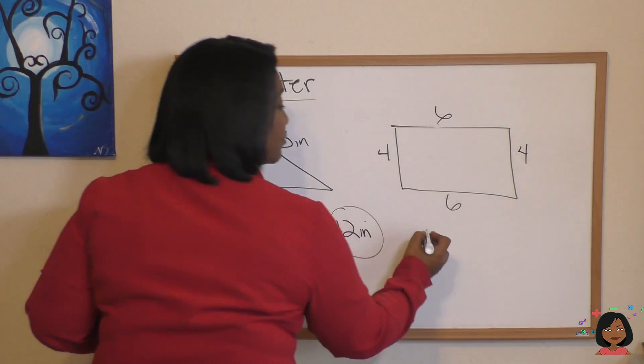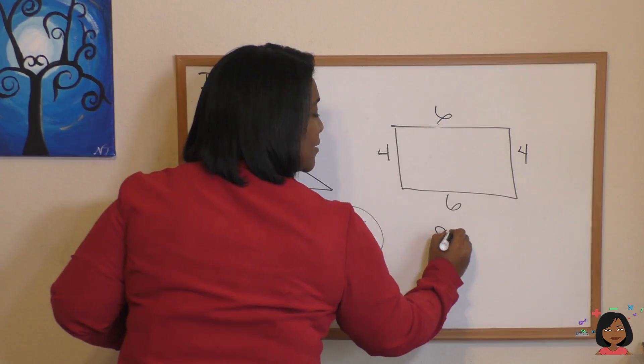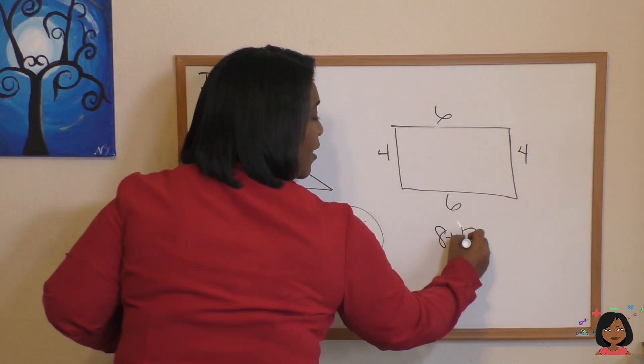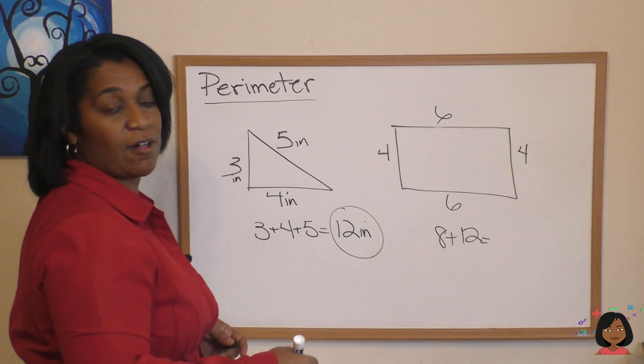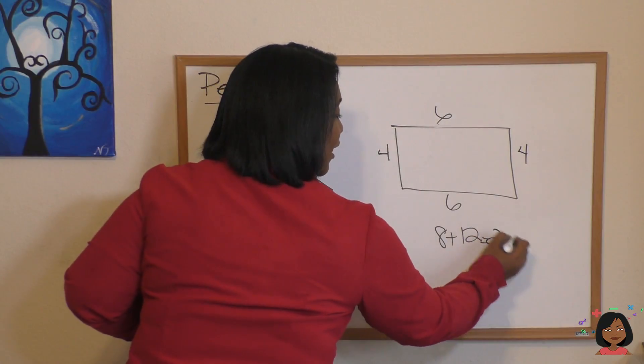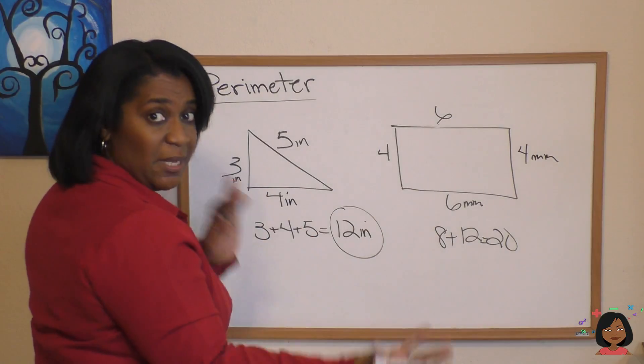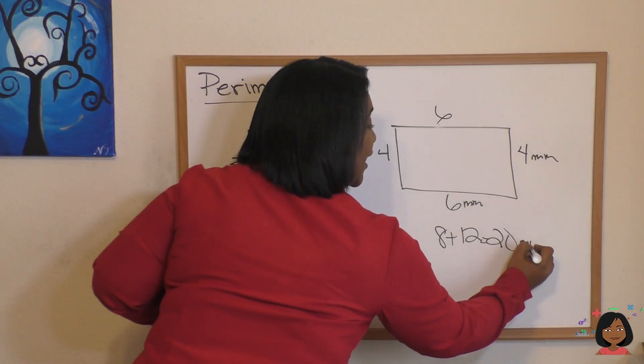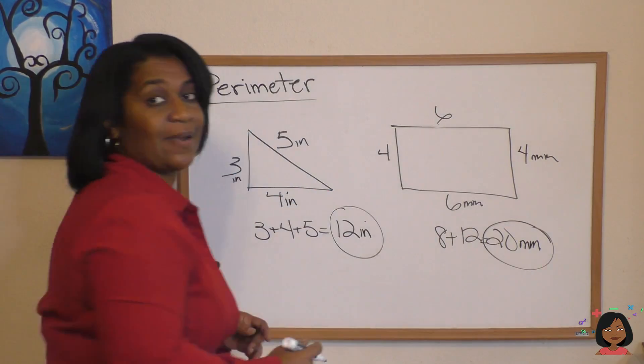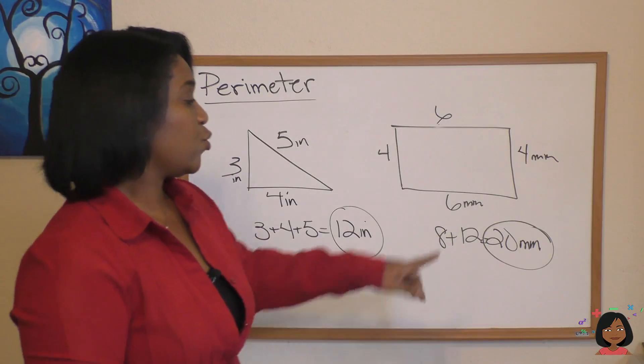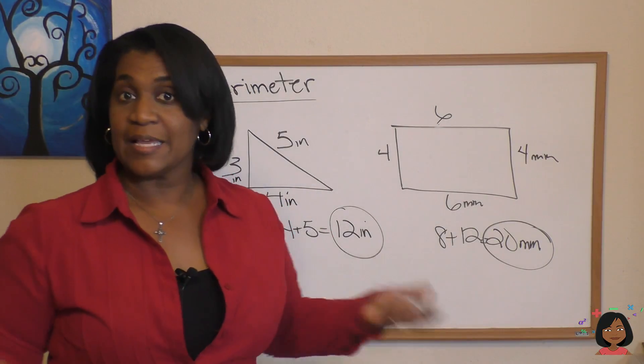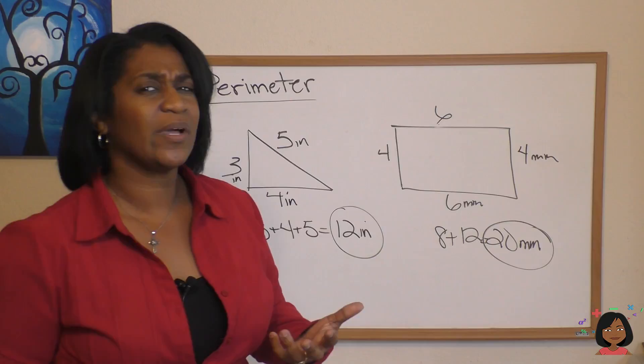So now we are prepared to add them all up: 4 plus 4 is 8, 6 plus 6 is 12, 8 plus 12 is 20. And look, I forgot to write my label again. I'm gonna give it millimeters this time. So our label has to always be in our answer for a perimeter: 20 millimeters is our answer.